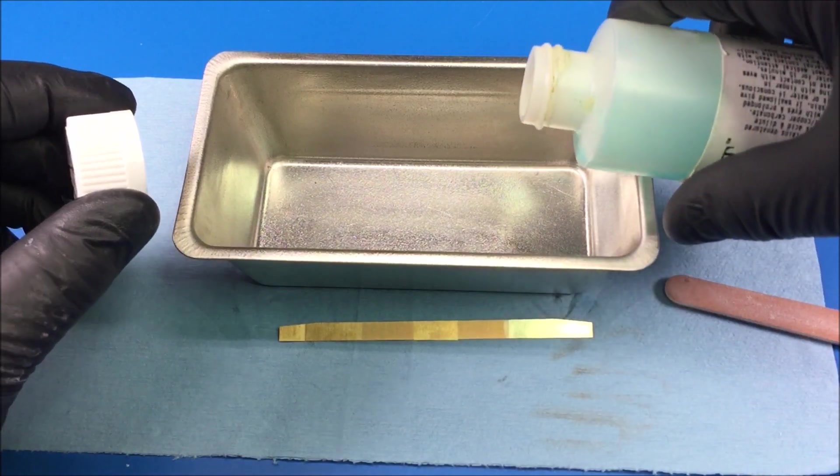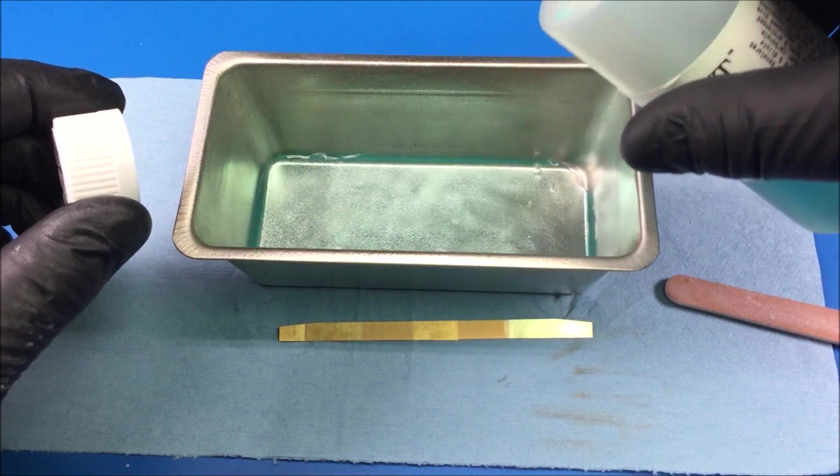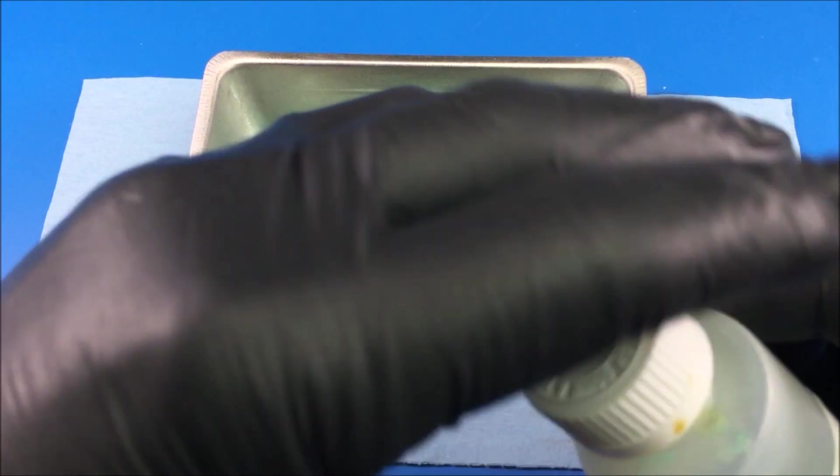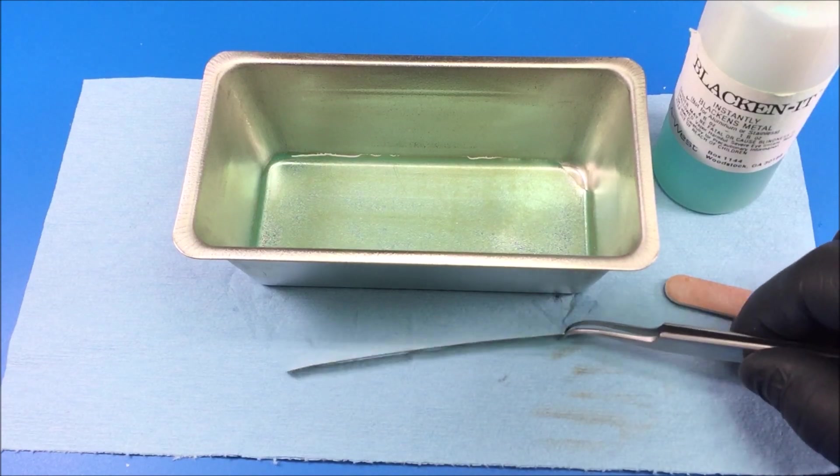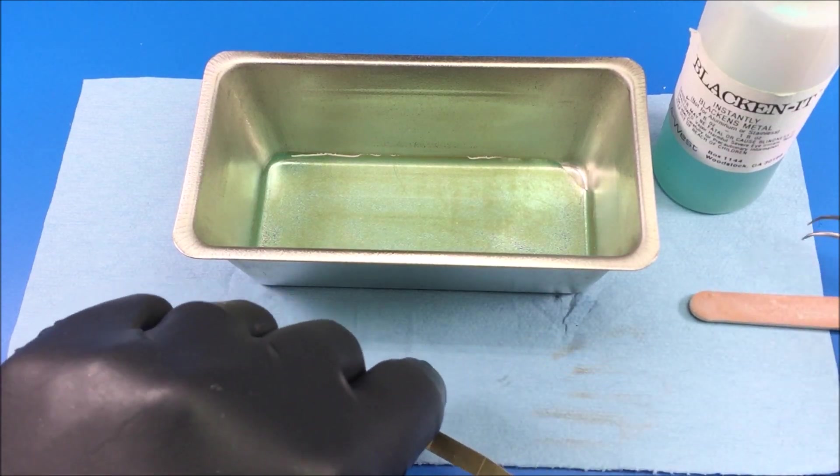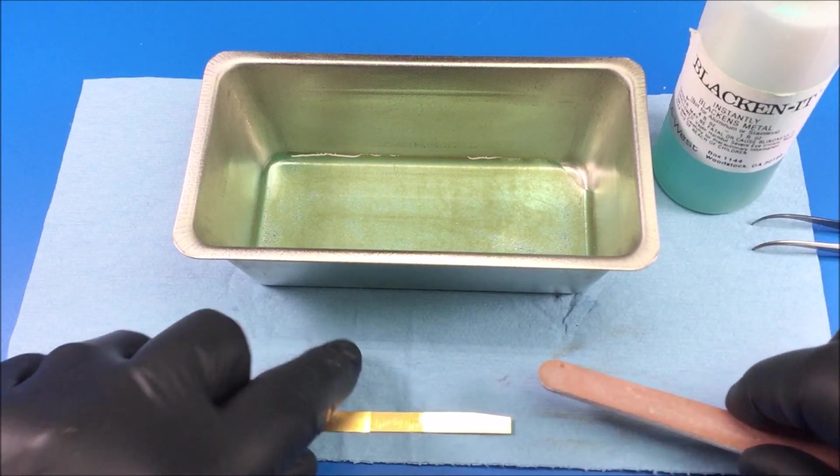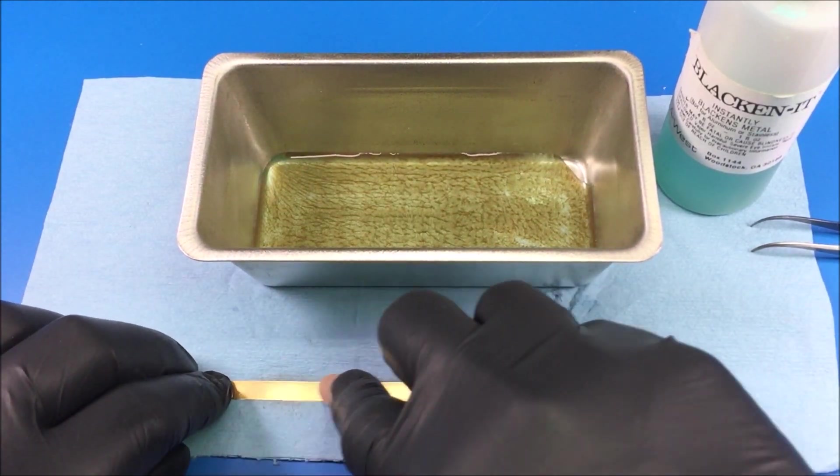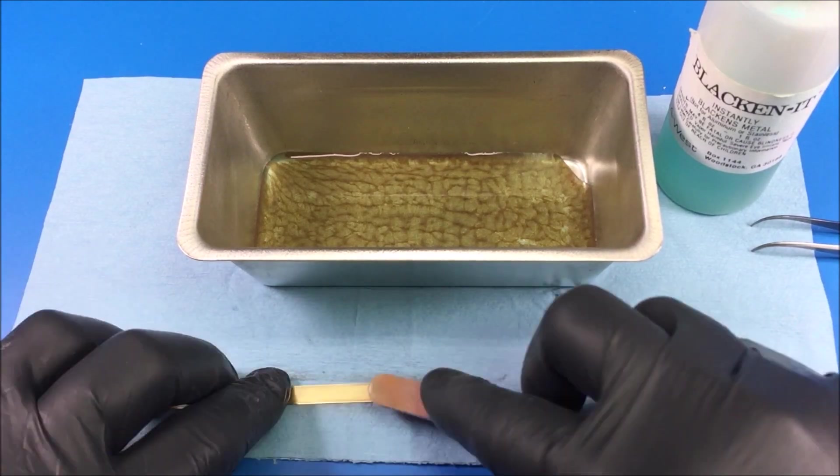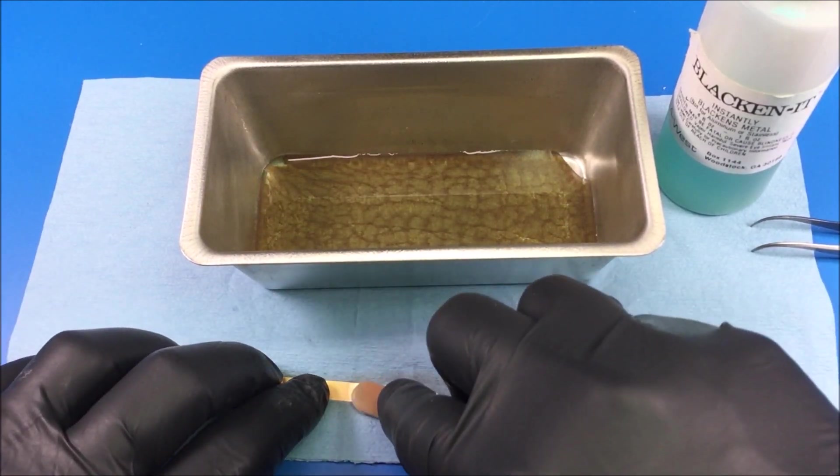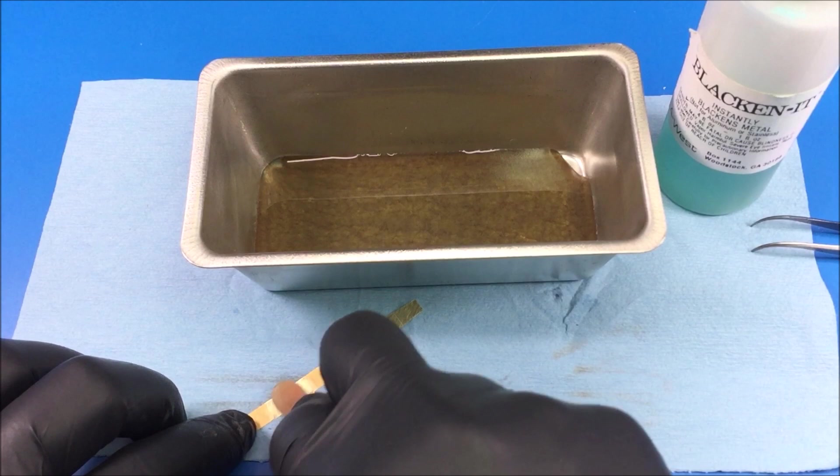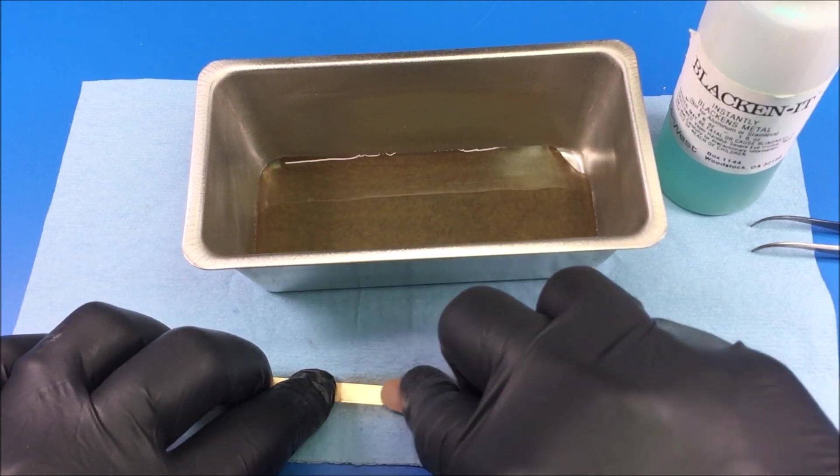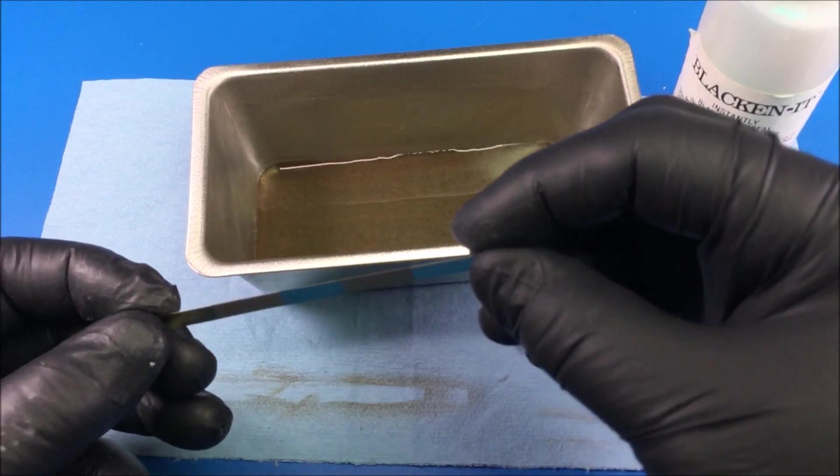The blackening just helps the brass from showing through the paint. So I'll show you how to do that. Let's take a little blackening solution, just enough to fill the bottom of the tray. I've got a scrap piece of photo etch here.